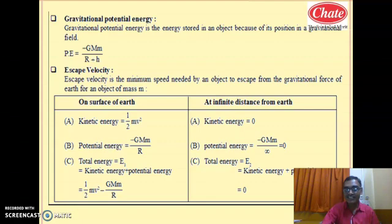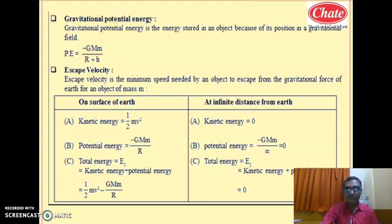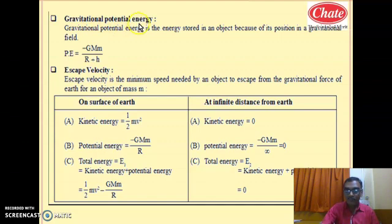At infinite height, g becomes zero, so potential energy becomes zero. It means the maximum value of gravitational potential energy is not infinite — it is zero. So the prediction about gravitational potential energy is that when height is very large, the potential energy seems to be zero. Then as the height decreases, potential energy decreases from that maximum value of zero.